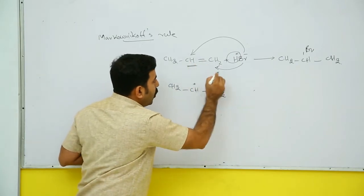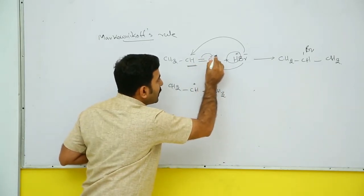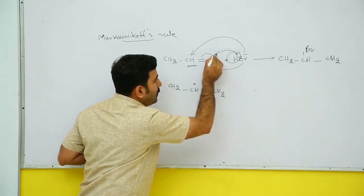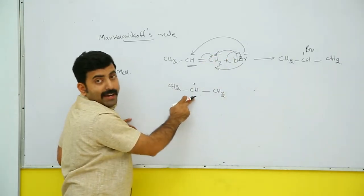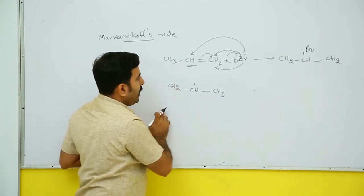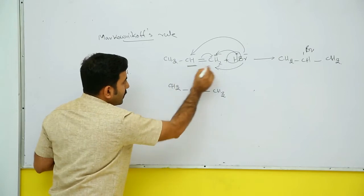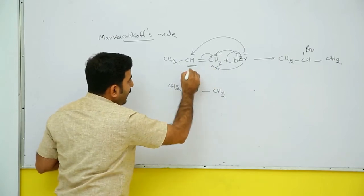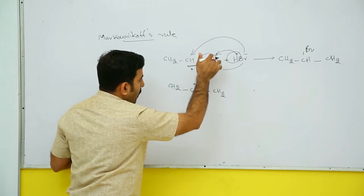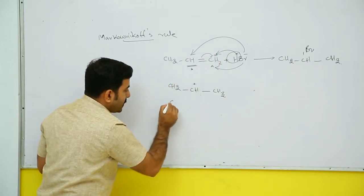There will be a positive charge and H+ will be attached, forming a carbocation. Another possibility is H+ comes to the other side. If H+ comes to position A this is one product; if H+ comes to position B, that is another product. So we have two possible carbocation intermediates.